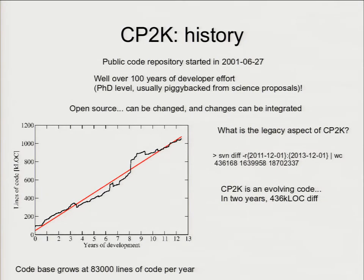CP2K is about a million lines of code now, and it has grown over time. This graph tracks our SVN repository, and you see it's growing at about 80,000 lines per year over the last 10 years or so. Most of this is being developed by PhD students and postdocs who have a science project but also do code development on the side. It's also quickly evolving — 400,000 lines of difference between two revisions in two years' time.